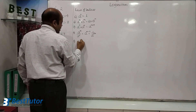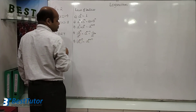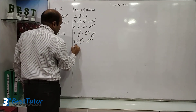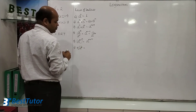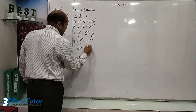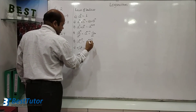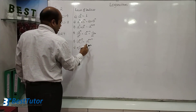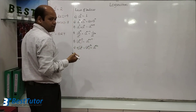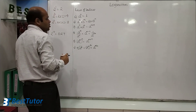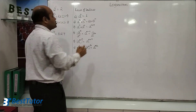Fifth law of indices: a raised to m, all raised to another power, becomes a raised to m multiplied by that power. Next: if I have the nth root of a number a raised to m, the nth root is written as the bracket raised to 1 by n, so I get a raised to m by n. These are the basic laws of indices that you should remember. Similarly, based on these, you have laws of logarithm, which we will look into next.